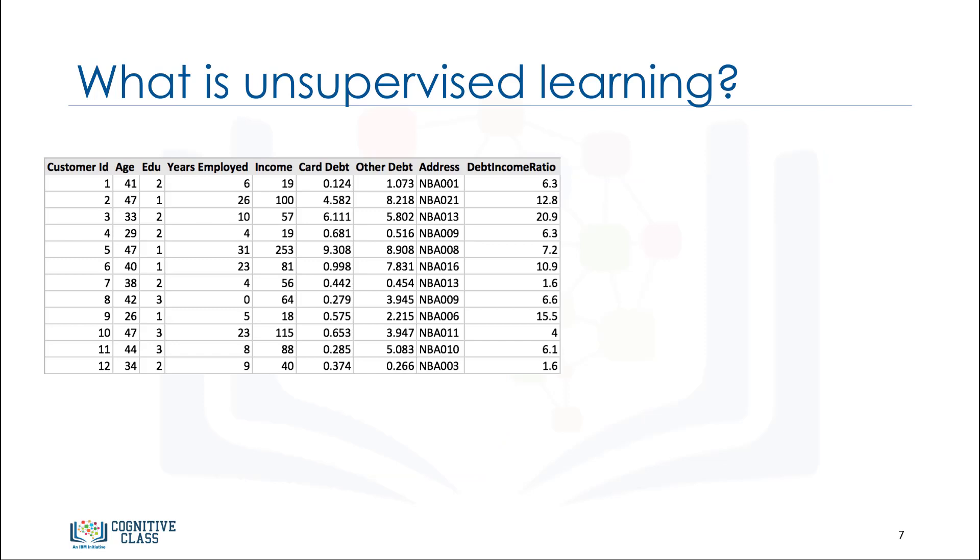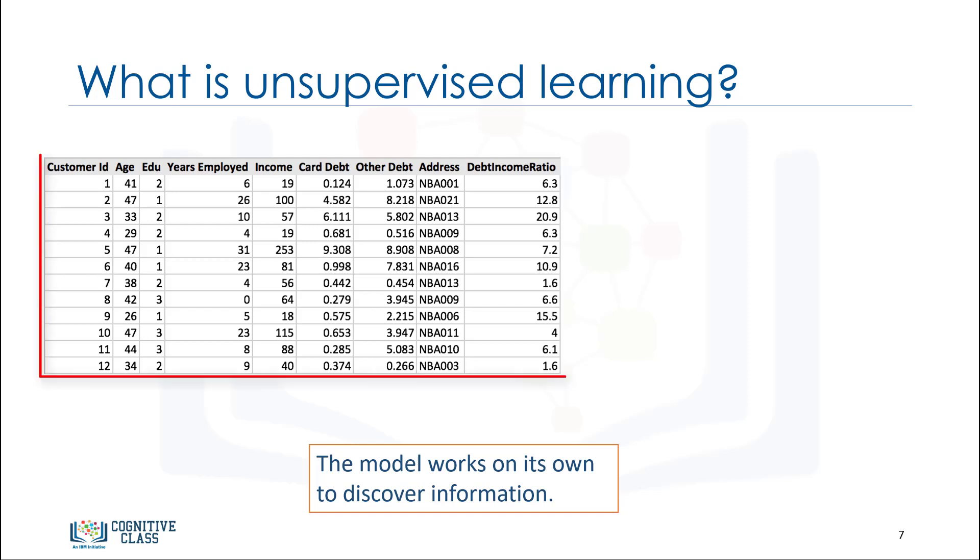Since we know the meaning of supervised learning, what do you think unsupervised learning means? Yes, unsupervised learning is exactly as it sounds. We do not supervise the model, but we let the model work on its own to discover information that may not be visible to the human eye. It means the unsupervised algorithm trains on the data set and draws conclusions on unlabeled data.